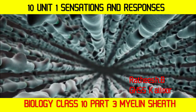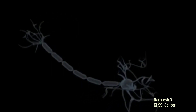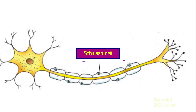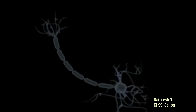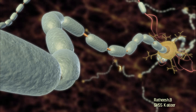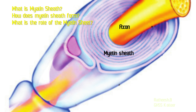We learned parts of the neuron in the last video. We have seen Schwann cells around the axon of the neuron. While studying the function of the Schwann cell, we also learned that it forms myelin sheath around the axon. Today, we are analyzing myelin sheath — its formation and functions. Have you seen the picture given? In the picture, you can see the axon surrounded by myelin sheath. What is myelin sheath? How is it formed? What are its functions? Let us examine these in detail.